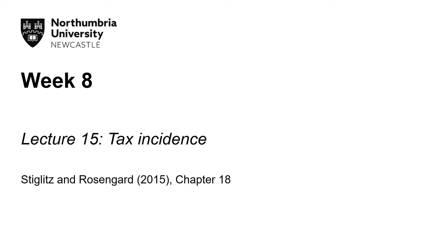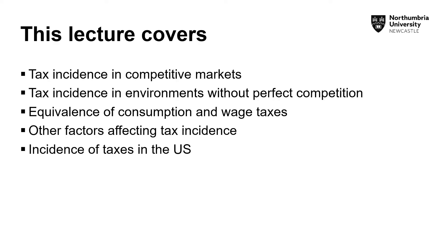Good afternoon, students. Welcome to week eight. This is lecture 15 and we are going to be talking about tax incidence. The reference chapter is chapter 18 of Stiglitz and Rosengard. We shall be looking at tax incidence in competitive markets, tax incidence in environments without perfect competition, equivalents of consumption and wage taxes, and other factors that affect tax incidence. We will be doing this in the context of the United States. There is much theory in this chapter, unlike the previous few chapters, so we are back to looking at diagrams.